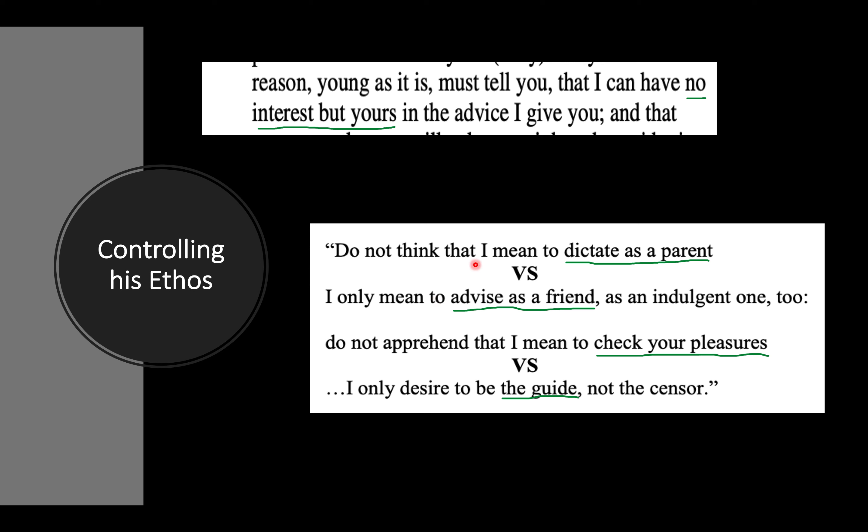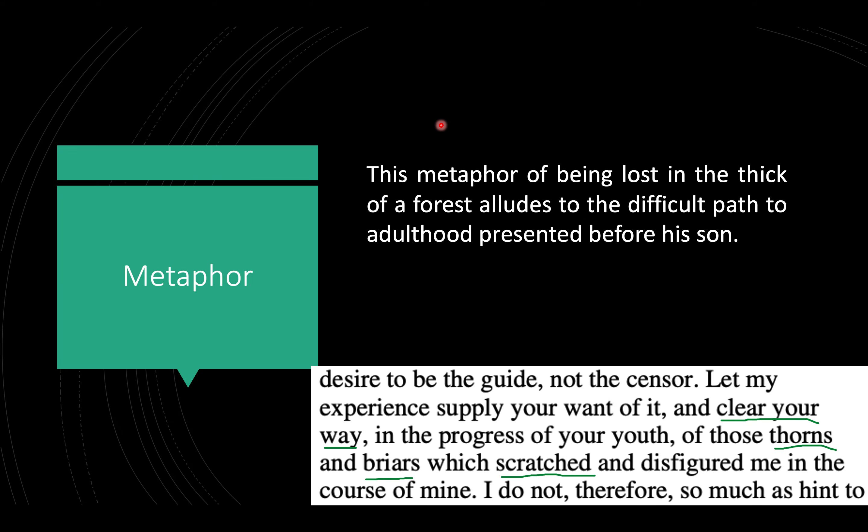Why is he controlling his ethos? He gets to paint himself in the way he wants to be seen. If the son thinks, 'he's going to tell me not to do this and that,' the father says, 'No — I am not this, I am that. I am not doing this, I am doing this.' By this pattern of antithetical writing, Chesterfield controls the way he is seen. Very clearly in the line: 'I have no interest but yours in the advice that I give you.' Later, there is even more control when he gives a metaphor.